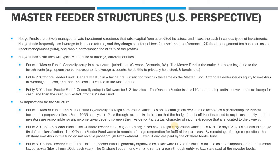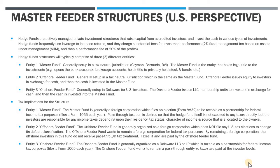The onshore feeder fund is a US entity — either an LLC or LP — and is always taxed as a partnership for federal tax purposes, continuing the pass-through taxation approach. The onshore feeder fund receives a K-1 from the master fund showing its allocation of income and expense, then files its own Form 1065 and passes through income and expense to investors. So there's pass-through taxation at both levels — the master fund and the onshore feeder fund — and investors ultimately pay taxes based on their allocation of income and expense.